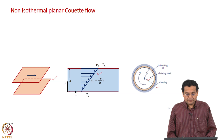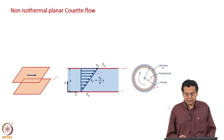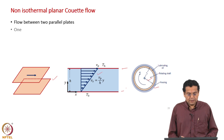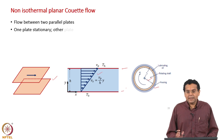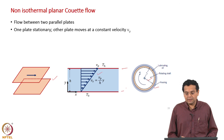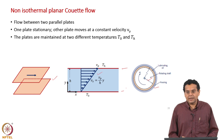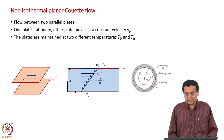The objective is to find out the temperature profile in this region. So let us proceed: flow between two parallel plates, one plate stationary, the other moving at a constant velocity Vp — that is the same as the earlier description. The difference now is that the plates are maintained at two different temperatures, T naught and Tₕ.